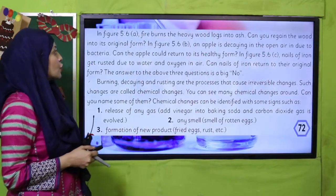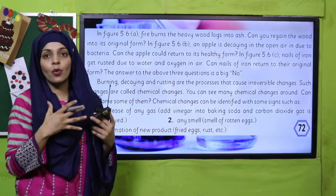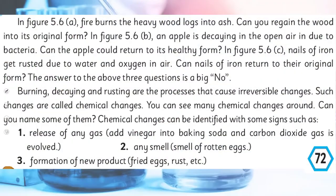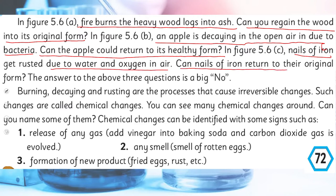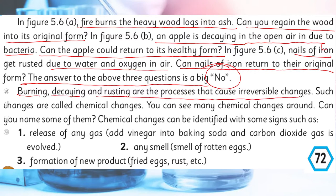Fire burns heavy wood logs into ash — can you regain the wood in its original form? No. An apple is decaying in open air due to bacteria — can the apple return to its healthy form? No. Nails of iron get rusted due to water and oxygen in air — can nails of iron return to their original form? The answer to all three questions is a big no, because burning, decaying, and rusting are processes that cause irreversible change. Such changes are called chemical changes.